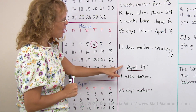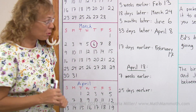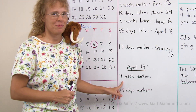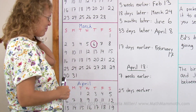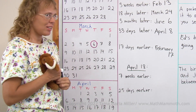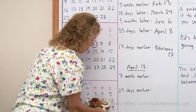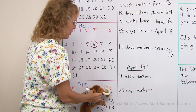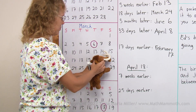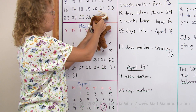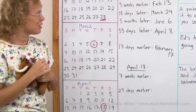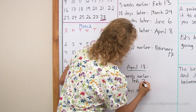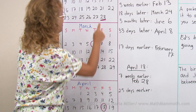Maybe you can try this now. April 18th — what date would we have seven weeks earlier? Matthew, you want to show them? April 18th. Matthew finds it. Go seven weeks earlier. Did Matthew do it right? February 28th. Looks like it. Friday, Friday.